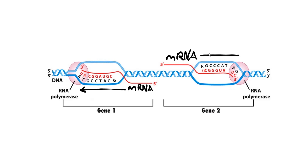And on the other side, gene 2, we also have this situation — it's always going to be 5' to 3'. And as you can see, they're actually being transcribed in opposite directions.